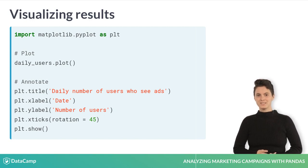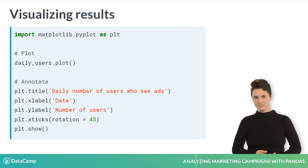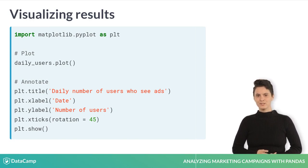We also rotate the x ticks — in this case the date labels — by 45 degrees to increase legibility. Finally, don't forget to include a call to plt.show to display the plot.